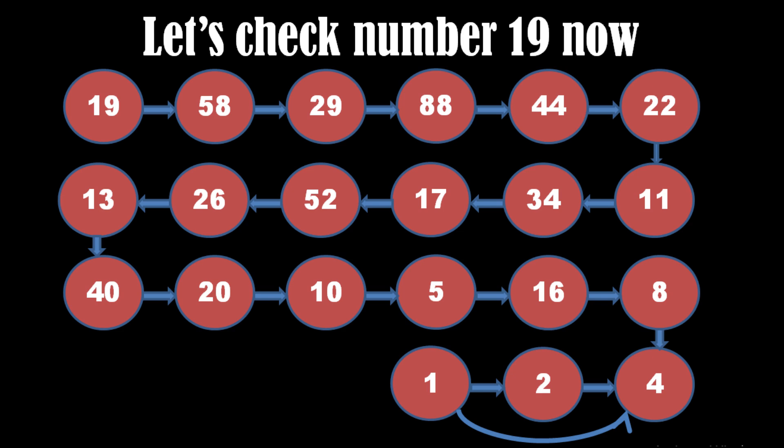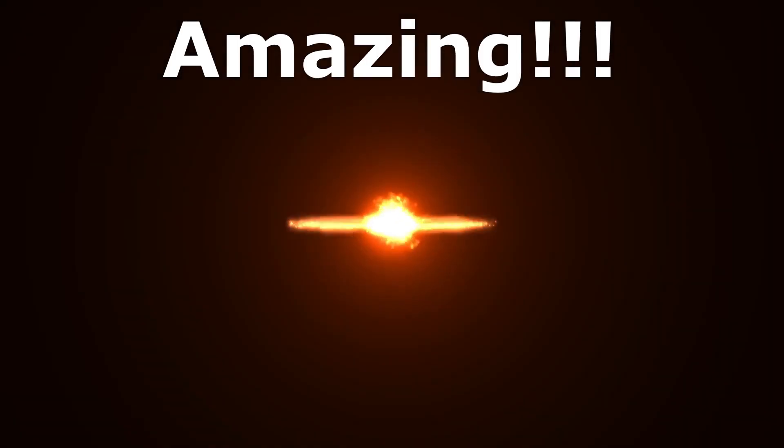You can observe the same thing with another example of number 19. This sequence of numbers also ends at 1 and forms a loop of numbers 4, 2 and 1. Amazing!